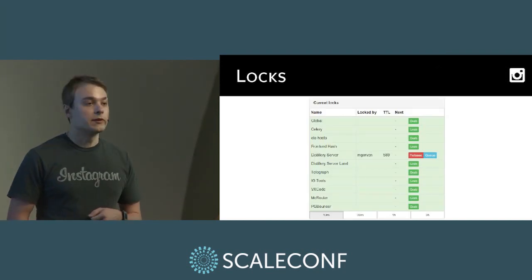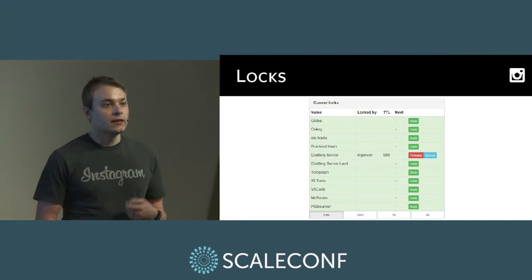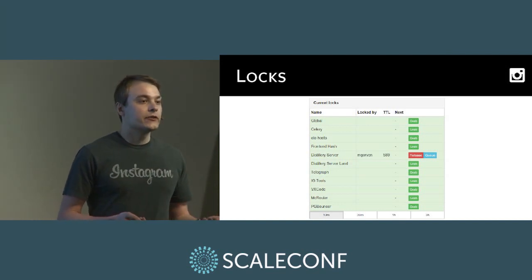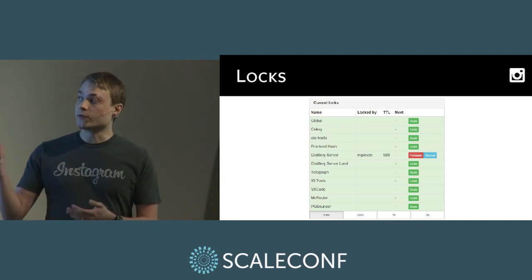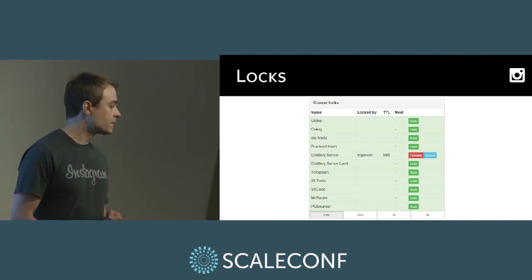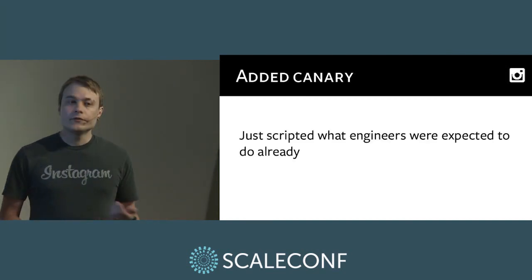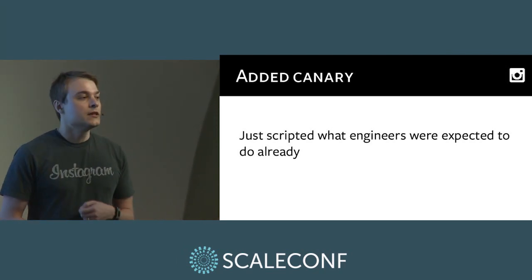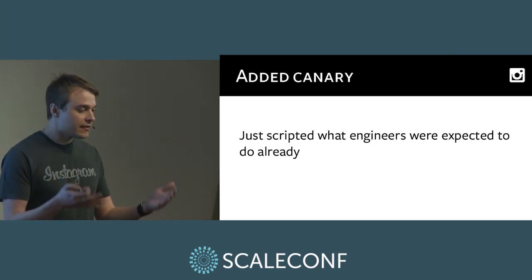Soron also holds what we call operational locks — how we coordinate access to various parts of our infrastructure. If you're working on something that can't be interrupted, you take the appropriate lock here, communicating to others that you are busy working on that part. The engineer doing a deployment needed to take the right lock, ensuring we didn't have multiple people deploying at the same time. The first thing we did was add a canary — initially just scripting what the engineer was already expected to do. Instead of running two rollouts, you'd run a single rollout.